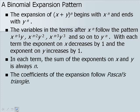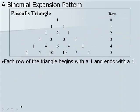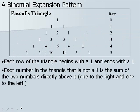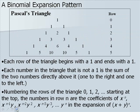The coefficients of the expansion follow Pascal's triangle, which we'll look at now. Each row of the triangle begins with a 1 and ends with a 1. Each number in the triangle that is not a 1 is the sum of the two numbers directly above it, one to the right and one to the left. Numbering the rows of the triangle 0, 1, 2, starting at the top, the numbers in row n are the coefficients of x to the n, x to the n minus 1 times y, x to the n minus 2 times y squared, x to the n minus 3 times y cubed, to y to the n in our expansion of x plus y to the n.